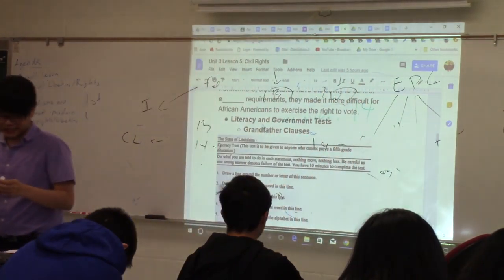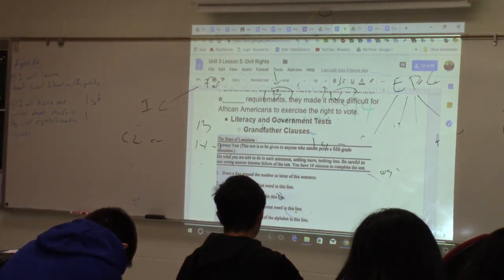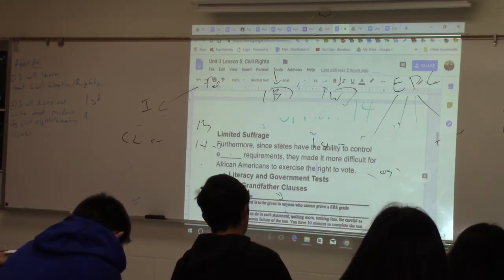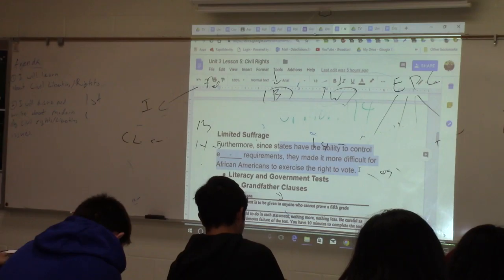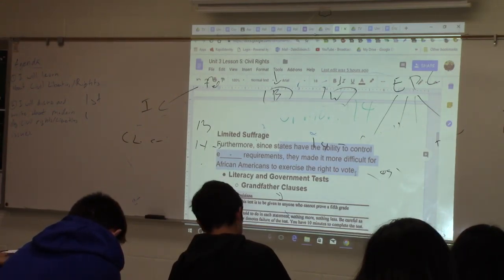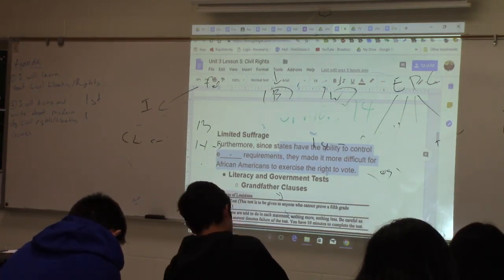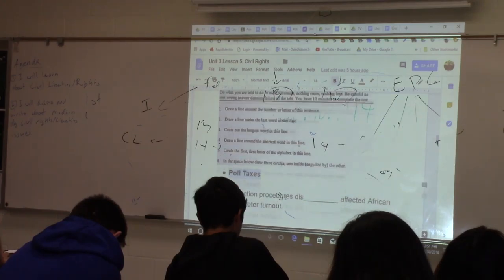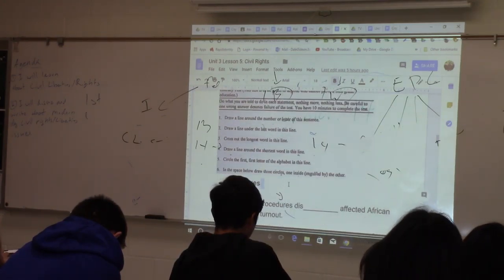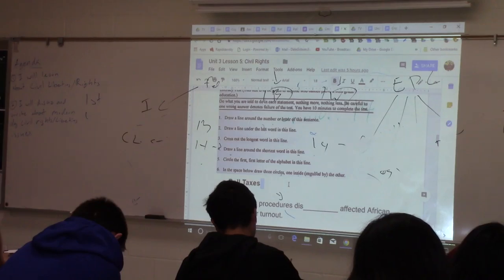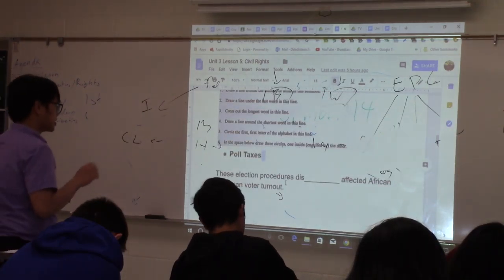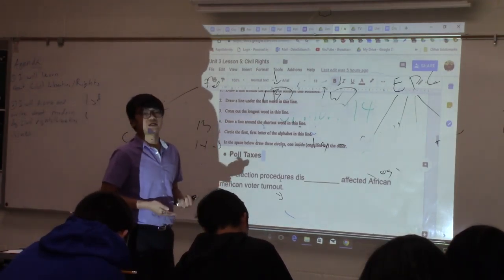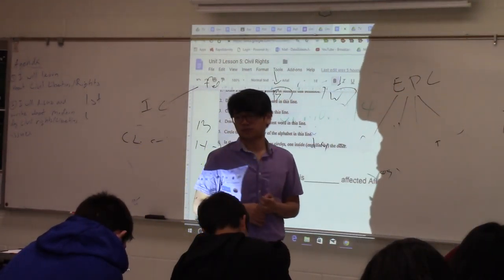Southern states were clever but evil. Since states had the ability to control election requirements, they made it more difficult for African Americans to exercise the right to vote. Other things that made it harder included poll taxes — a fee to be able to vote — and who was less likely to afford that? Minorities. These election procedures disproportionately affected African Americans in the United States while not affecting white people as much.